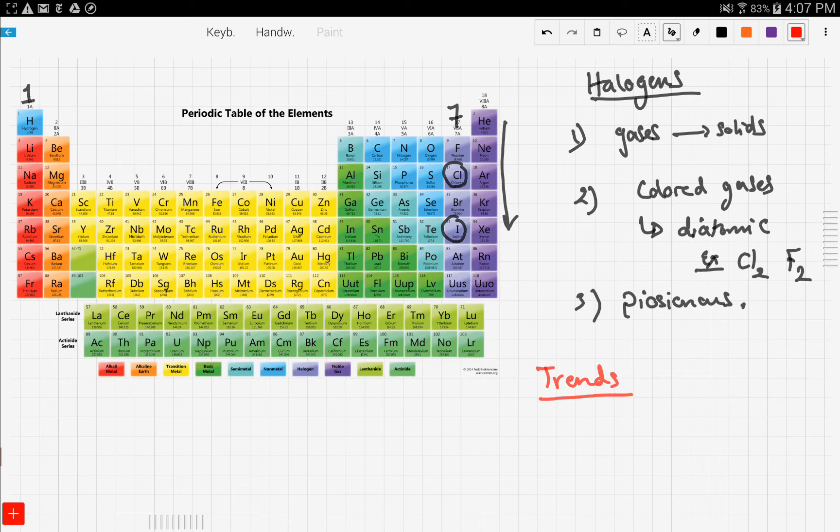So as you go down the halogens group, you notice that the atomic mass increases. Now it starts with fluorine at 18.9 and it goes to iodine to be 126. So due to that, the boiling point increases because the mass increases.